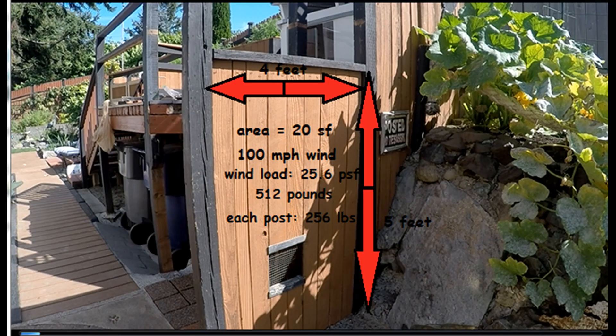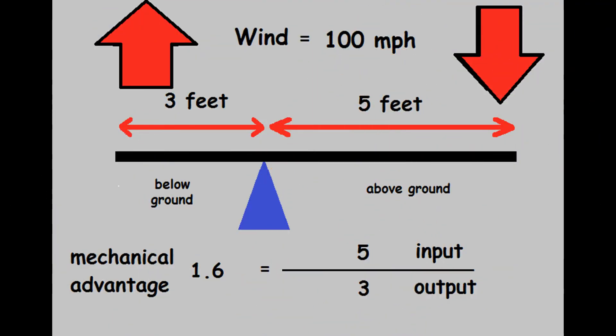The area of our fence has dropped to 20 square feet. The wind load is still 25.6 pounds per square foot, but the smaller fence now only has 512 pounds of force on it. And this correlates to 256 pounds of force transmitted down each post. The 256 pounds will be amplified by 1.6 when it goes into the ground, which only gives us 409 pounds trying to knock that fence over. That's less than half the force of our last example.